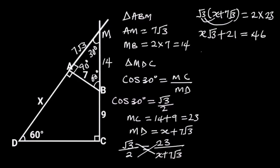Collecting like terms will give us X root 3 is equal to 46 minus 21. 46 minus 21 is equal to 25. So X root 3 is equal to 25.